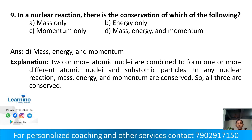In a nuclear reaction, there is conservation of which of the following? Option A: mass only. Option B: energy only. Option C: momentum only. Option D: mass, energy, and momentum. In a nuclear reaction, mass-energy and momentum are both conserved. The correct answer is Option D: mass, energy, and momentum.